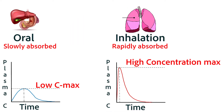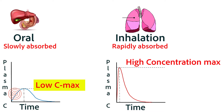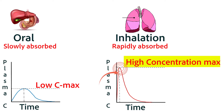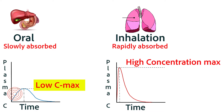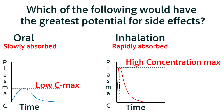We've just explained that there's a big difference between the concentration max, or C-max, between a medication that is orally administered versus one that is intravenously injected or administered by inhalation. The absorption of oral medications will be spread over time much more. Let's think about what that would mean for side effects and potential overdose.